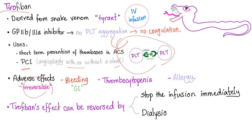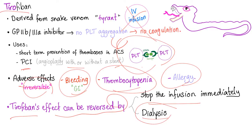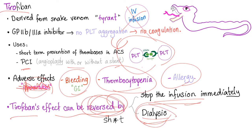Adverse effects of Tirofiban: it can cause bleeding and thrombocytopenia, and allergy. Unlike Abciximab, Tirofiban's effects can be reversed by stopping the infusion immediately, and dialysis when needed. Abciximab is irreversible, but Tirofiban is not — you can reverse it by stopping the infusion as well as dialysis.